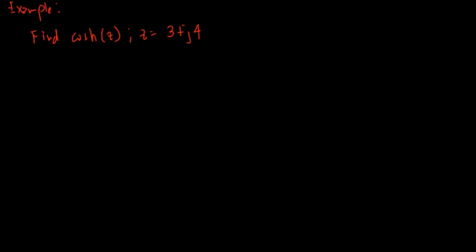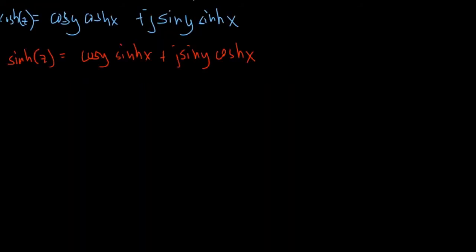So we'll have our solution. We'll be applying here our formula. So cosine hyperbolic cosine z is equal to cosine y hyperbolic cosine x plus j sine y hyperbolic sine x. So we need to check it first from our previous formula. So I believe that is correct.